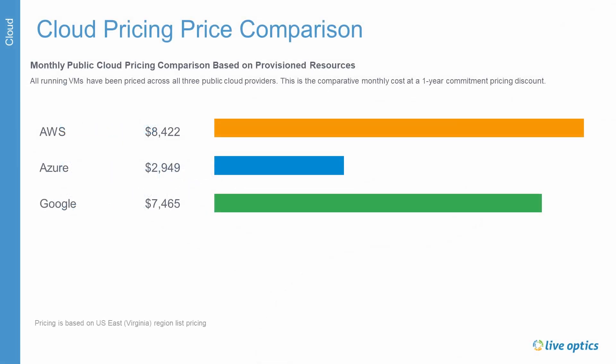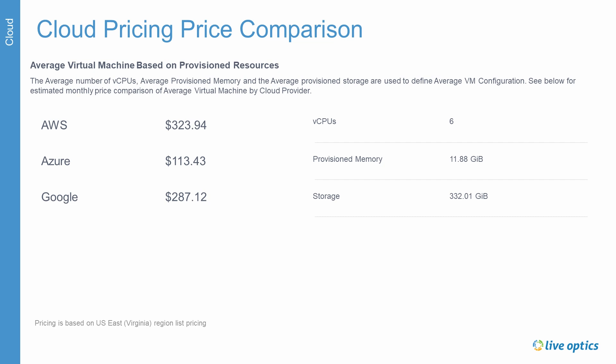This slide shows a high-level comparison of the monthly cost to host all the virtual machines in each of the public clouds. Based on provisioned resources, this illustrates the average virtual machine and how much the monthly cost would be to host a virtual machine of this configuration in each of the public clouds.